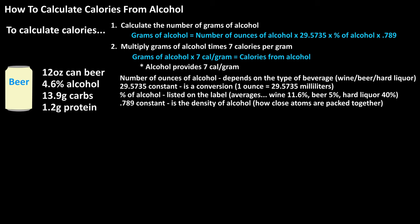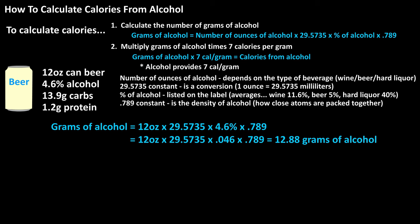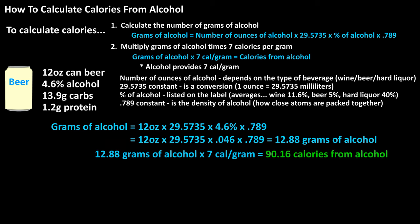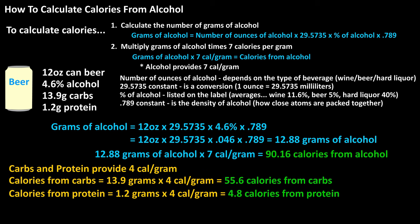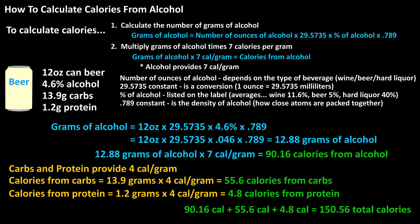Now let's look at a 12-ounce can of beer that has 4.6% alcohol, 13.9 grams of carbohydrates, 1.2 grams of protein, and no fat. Grams of alcohol equals 12 times 29.5735 times 0.046 times 0.789, which calculates to 12.88 grams of alcohol. Multiplying 12.88 times 7 calories per gram equals 90.16 calories from alcohol. Carbs and protein both provide 4 calories per gram, so 13.9 times 4 equals 55.6 calories from carbs, and 1.2 times 4 equals 4.8 calories from protein. Adding them up: 90.16 plus 55.6 plus 4.8 equals 150.56 total calories.